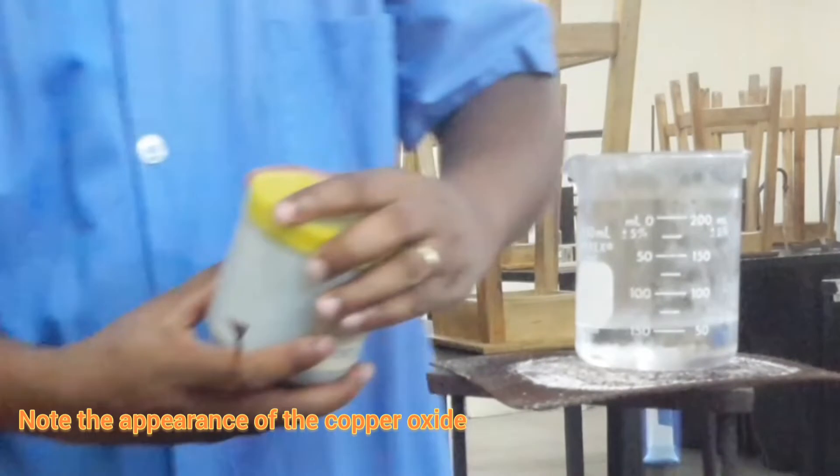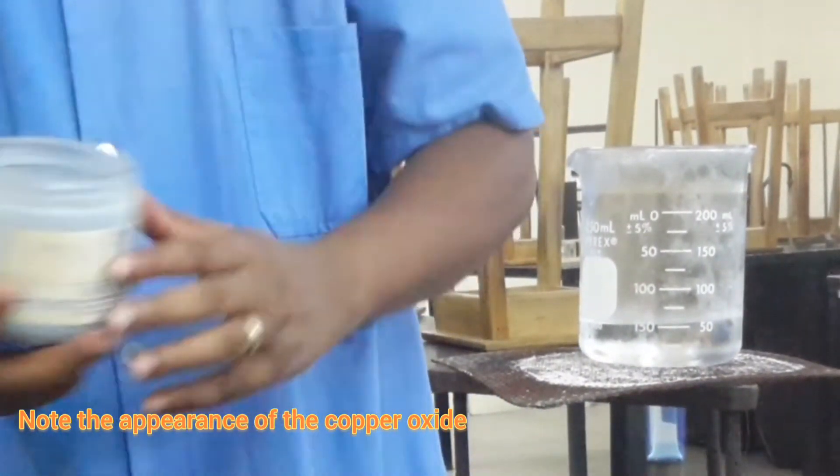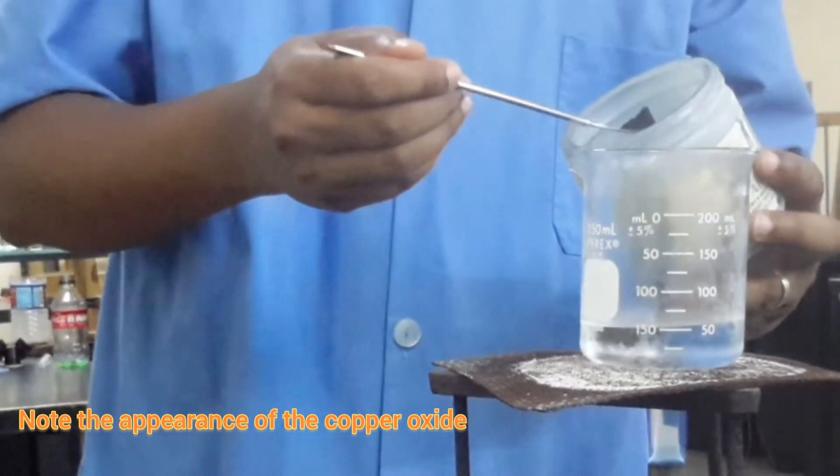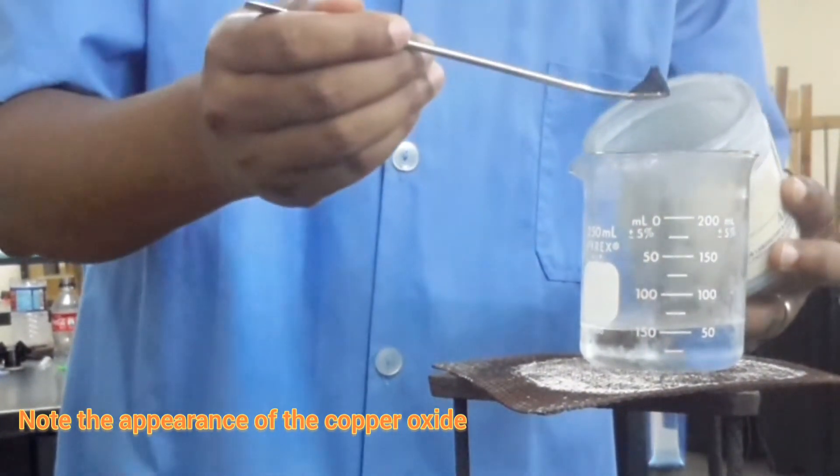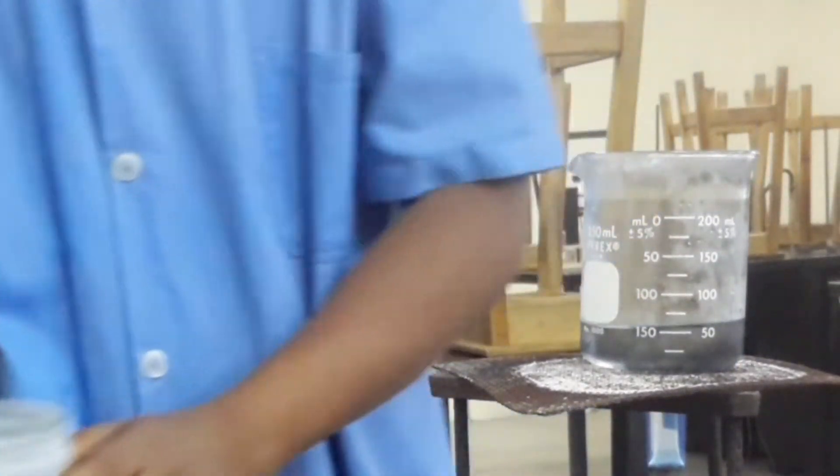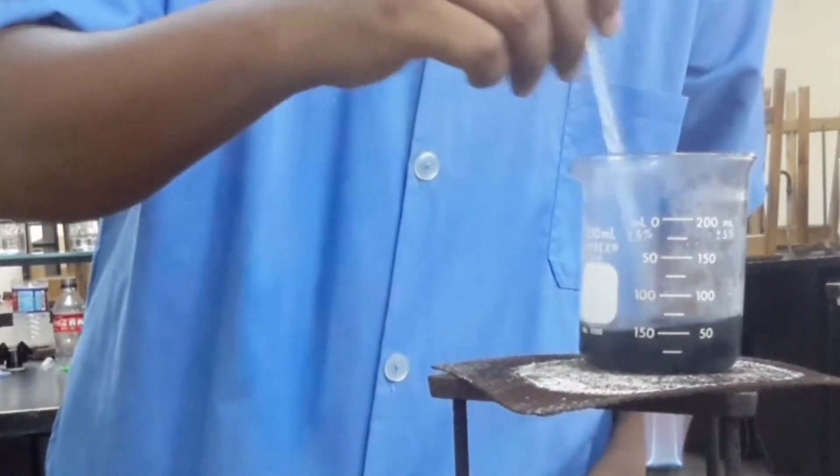We're going to be adding copper oxide to the acid in excess. We're going to do it spatula load by spatula load. One, then two, and we'll just stir as we go along.